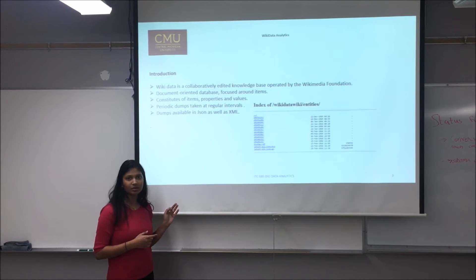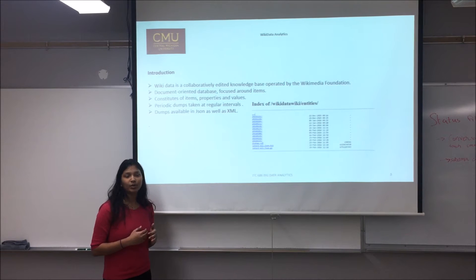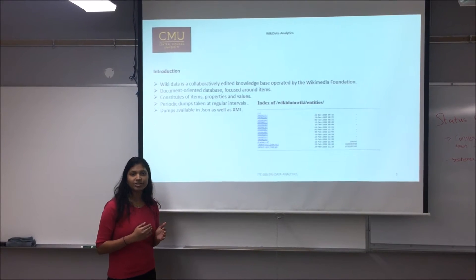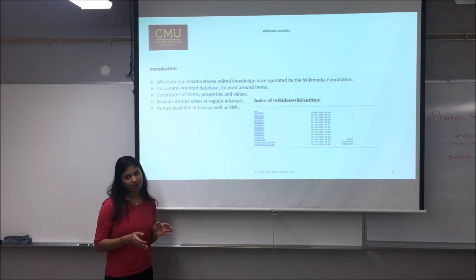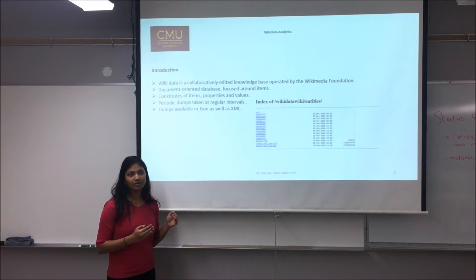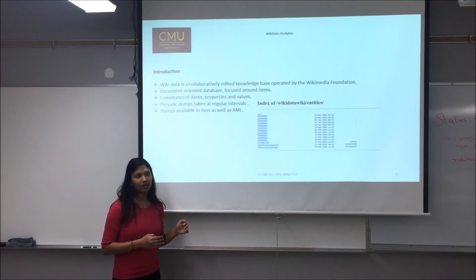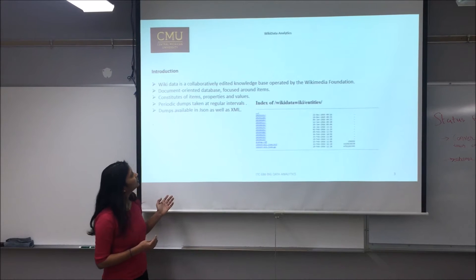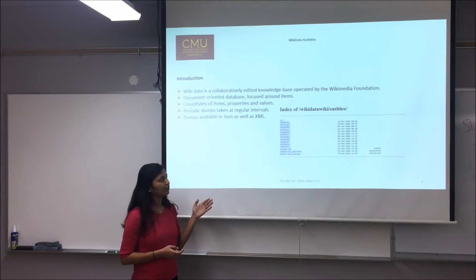In this project we would be only using the JSON and XML formats. We do have a summary table which constitutes of the properties and the corresponding property IDs — those PIDs — and a segregated form of PIDs for each category. You can also have a glimpse of the Wikidata from where you can actually download the data.